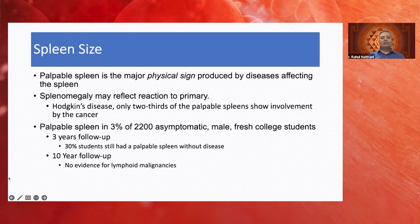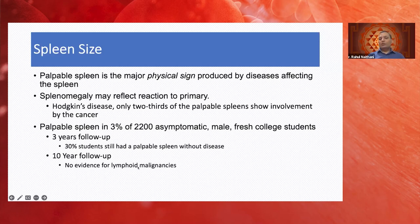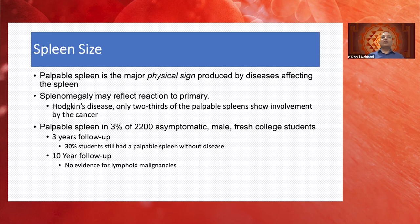A palpable spleen is a major physical sign generally indicating disease, accounting for the normal variation. In one study of 2,200 asymptomatic male college students, 3% had splenomegaly which was asymptomatic. On 3-year follow-up, at least 30% of these students continued to have a palpable spleen, and a 10-year follow-up showed no evolution into lymphoid malignancy. So spleen enlargement does not necessarily signify illness. Also, splenomegaly may be part of a primary disease or a reaction to the primary — in older Hodgkin's lymphoma staging splenectomies, only one-third actually had Hodgkin's involvement; two-thirds were reactive.